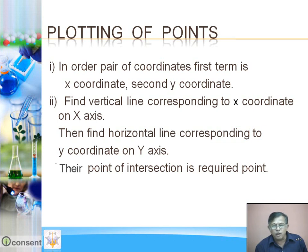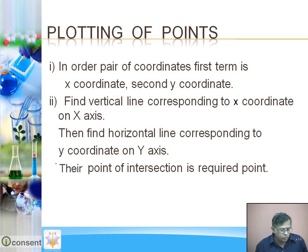If the y-coordinate is minus 4, find minus 4 below the origin on the y-axis and draw a horizontal line. The point of intersection of these two lines — the vertical line and the horizontal line — is the required point.